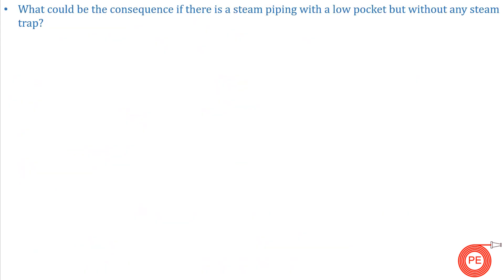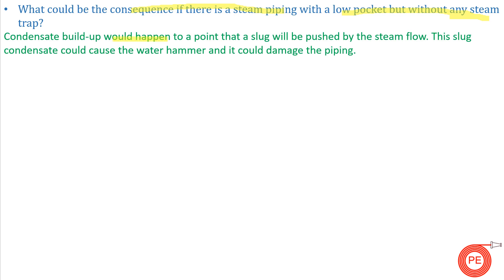Next question: what could be the consequences if there is steam piping with a low pocket but without any steam trap? Condensate buildup will happen to a point where slugs are pushed by the steam flow. This slug condensate can cause water hammer and damage the piping. That's why a steam trap is required at low points in steam pipelines to remove condensate.